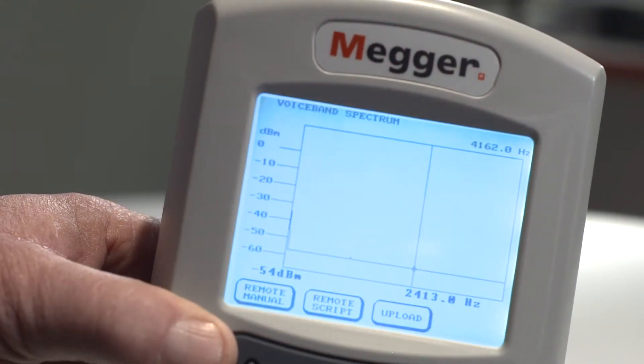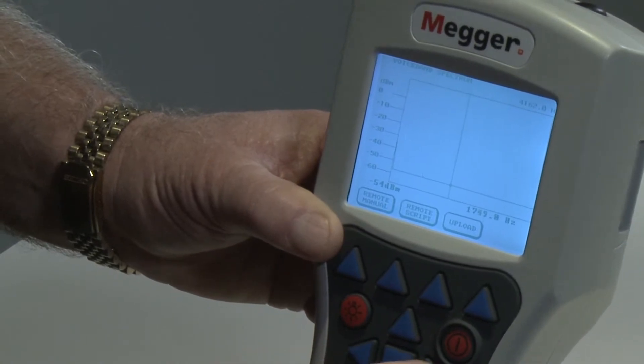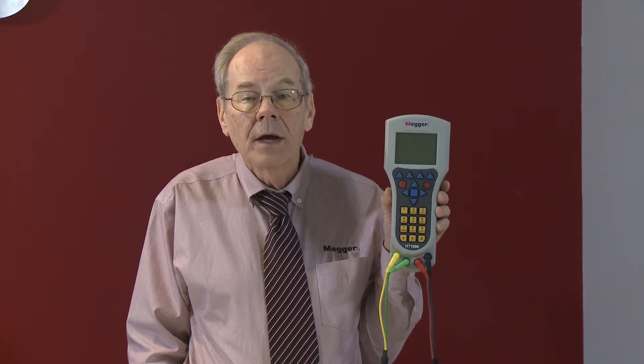Cursor: The vertical line on the spectrum display that can be moved anywhere across the screen using the left and right navigation keys. The cursor is used to identify specific signal amplitude measured in dBm and frequency.